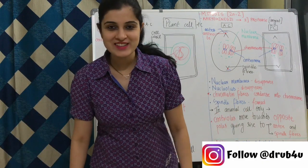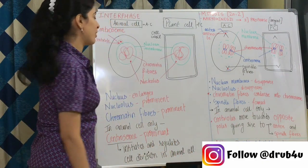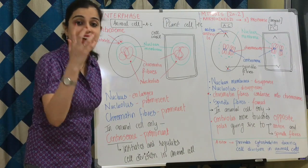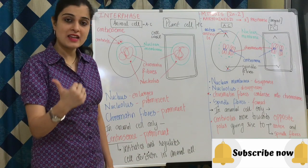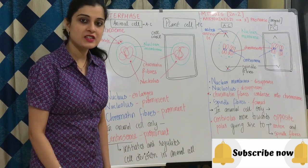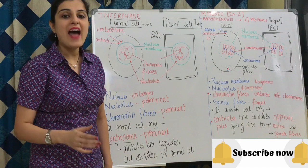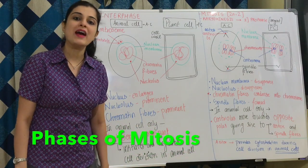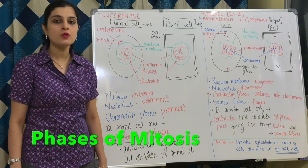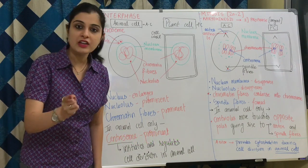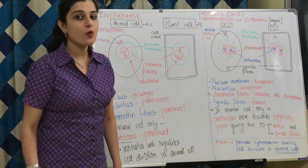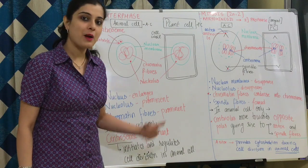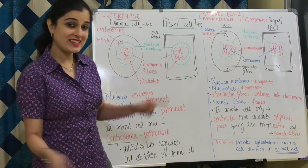Hello students. Today we are going to have a detailed conversation about exactly what changes take place in animal cells as well as plant cells during interphase and division phase, that is M phase. We will be taking M as mitotic phase because we are talking about mitosis. If you have missed the video on cell cycle, I will attach it in the description box below. Click the link for a better idea. So let's get started.